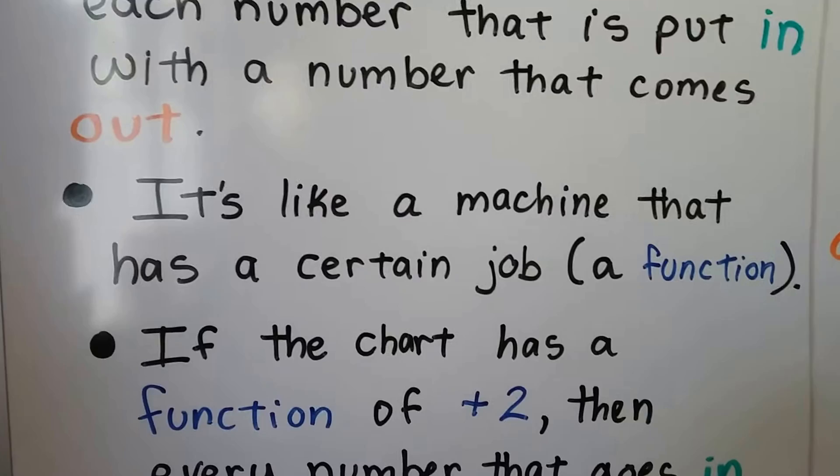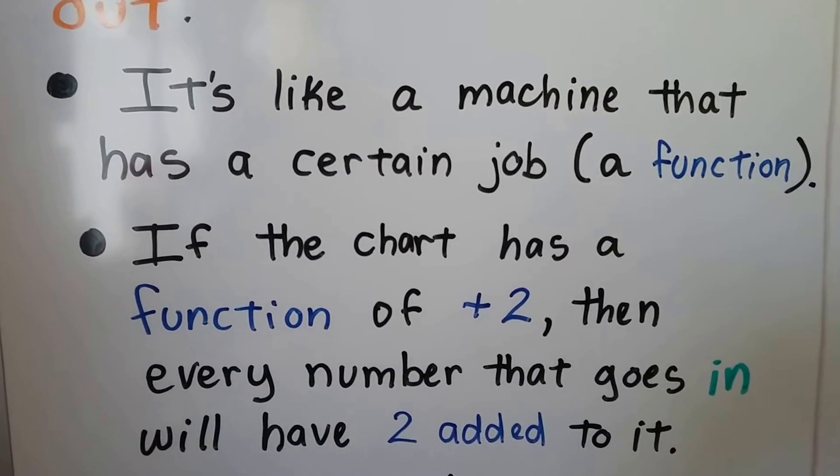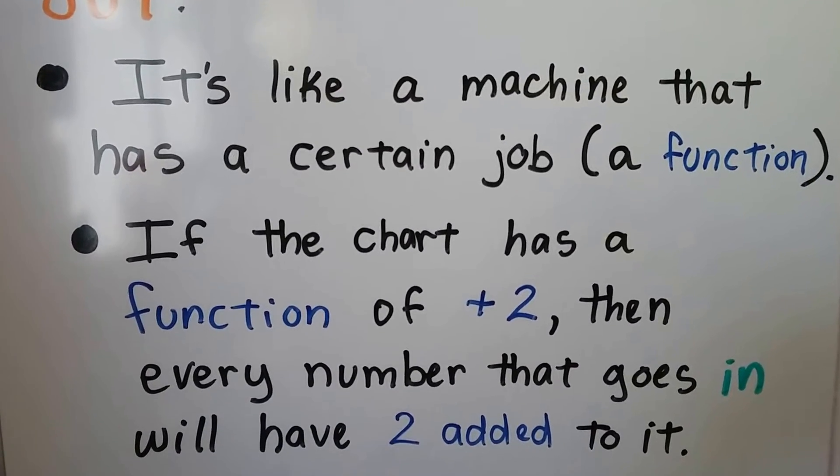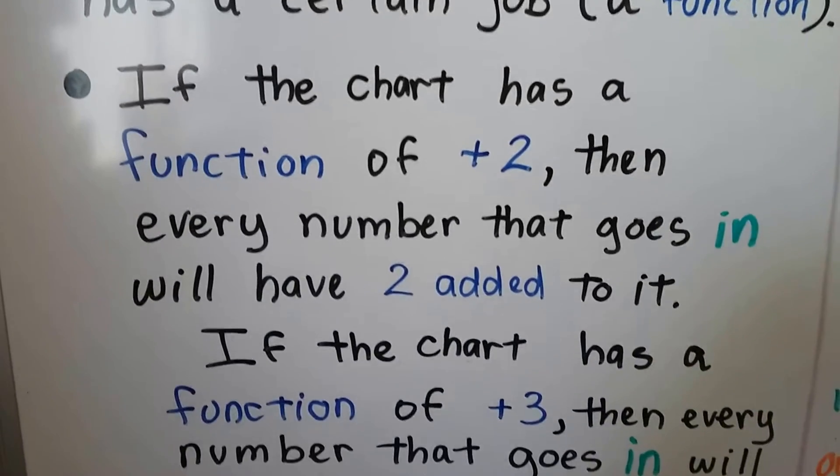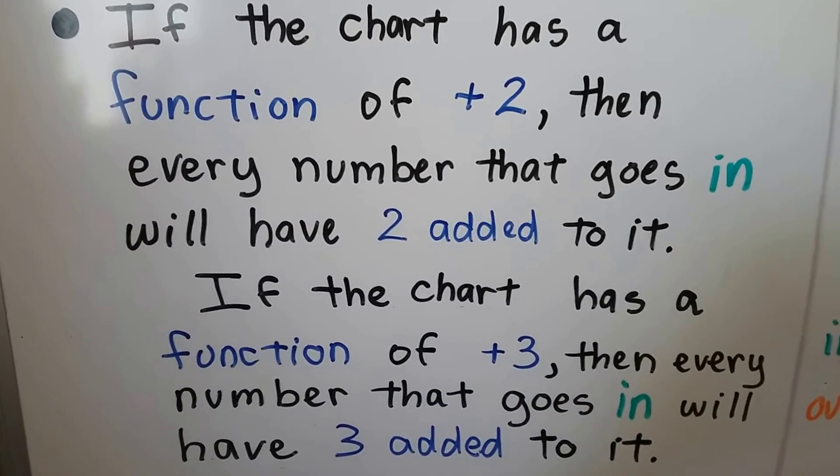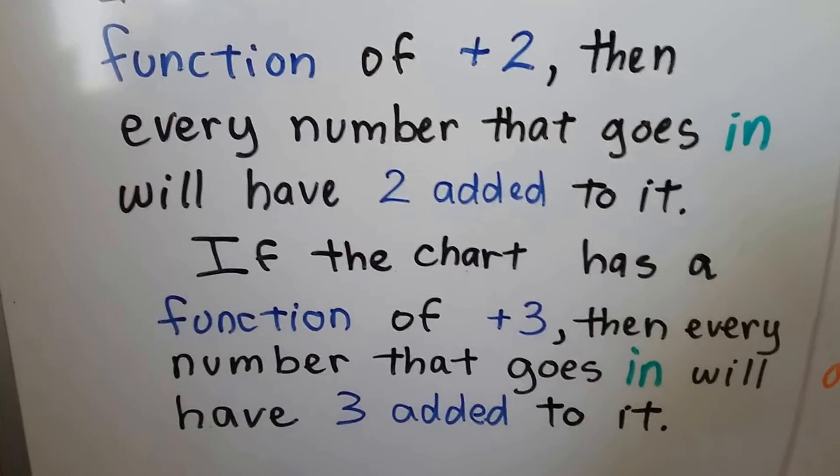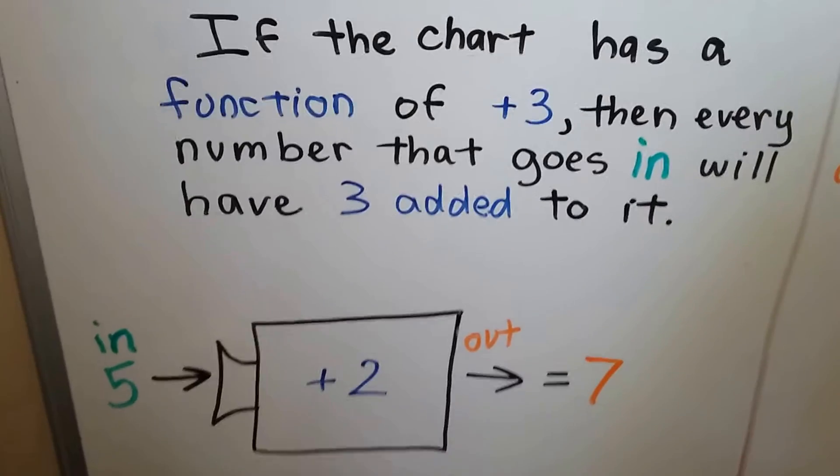If the chart has a function of plus 2, then every number that goes in will have 2 added to it. If the chart has a function of plus 3, then every number that goes in will have 3 added to it. So we can look at it like a machine.